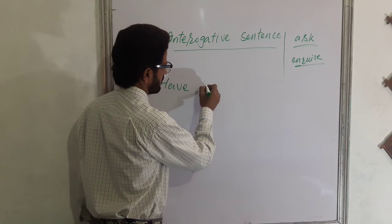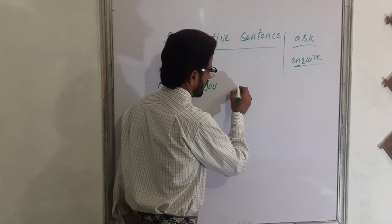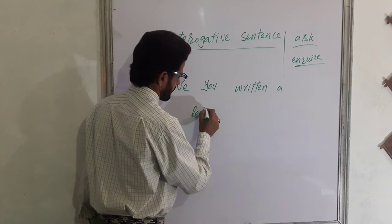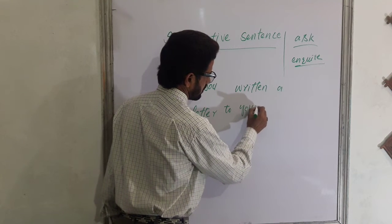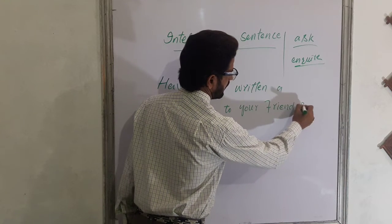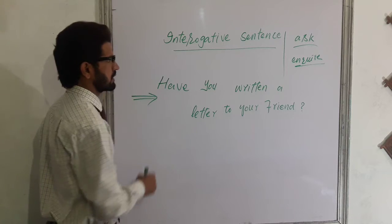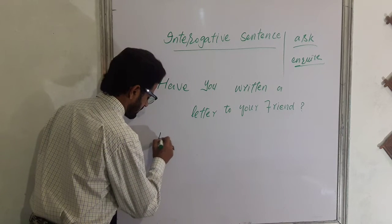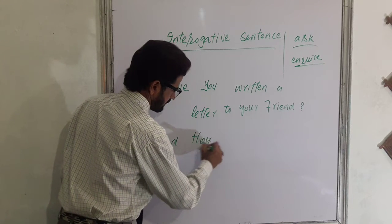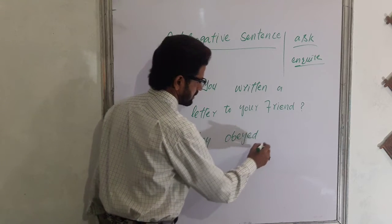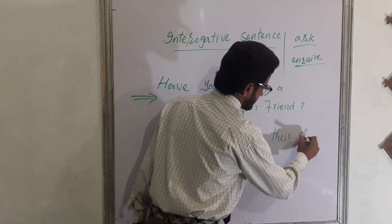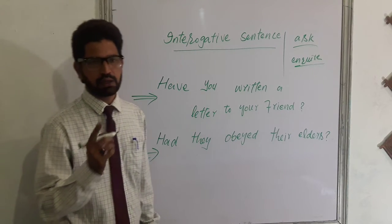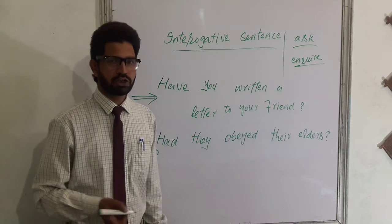For example, in present tense: 'Have you written a letter to your friend?' These kinds of sentences are known as interrogative sentences. In past tense: 'Had they obeyed their elders?' One more example: 'Shall we pack the luggage?' — where the helping word 'shall' comes before the subject.